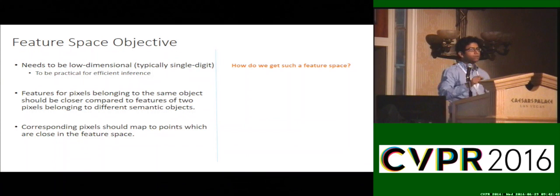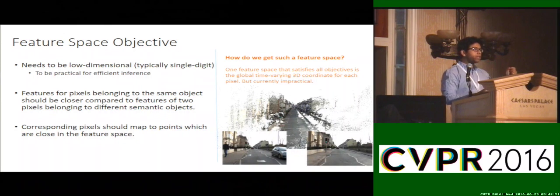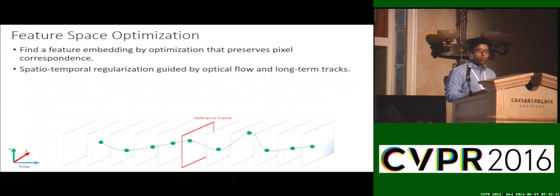So how do we get such a feature space which satisfies all these criteria? That's the main important problem we address in this paper. If you could do dense 3D reconstruction and use global 3D coordinates as the feature space, that could satisfy all these criteria because global 3D coordinates are invariant to viewpoint. But how do you deal with dynamic objects? You also need camera calibration and pose estimation. Can we do something that works for any arbitrary monocular video? What we do is find a feature space by optimization, finding a feature embedding which respects correspondence. The main idea is to use spatiotemporal regularization with correspondence information from optical flow or long-term tracks.